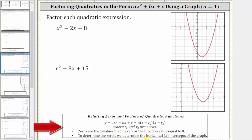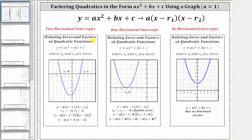By determining the horizontal intercepts of the graph, we will be able to write the given quadratic expressions in factored form. When we graph a quadratic function on the coordinate plane, there are three possible outcomes. We can have two distinct horizontal intercepts, as in this graph, where x equals negative three and x equals positive two are both zeros of the quadratic function.